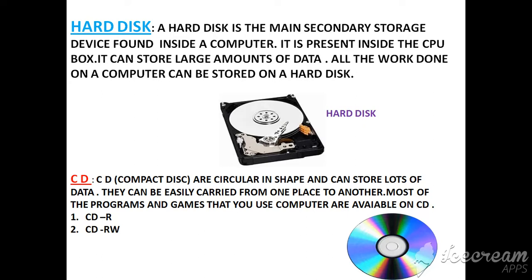CD (Compact Disk): CDs are circular in shape and can store lots of data. They can be easily carried from one place to another. Most of the programs and games that you use on a computer are available on CD. There are two types of CD: CD-R, that is CD Recordable, and CD-RW, that is CD Rewritable.